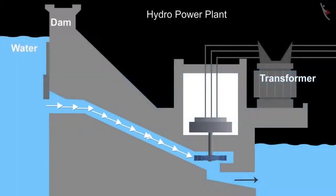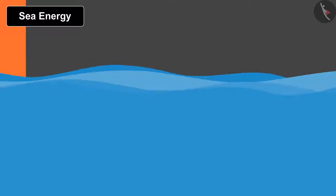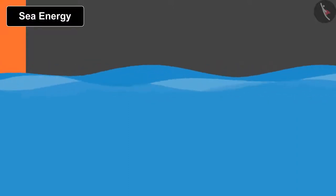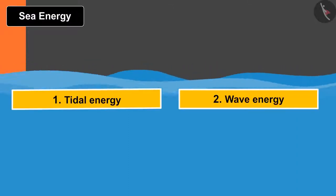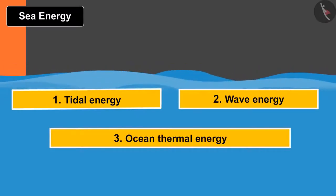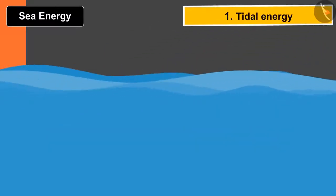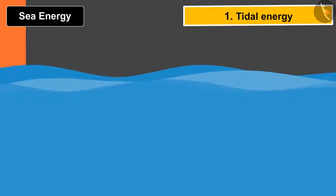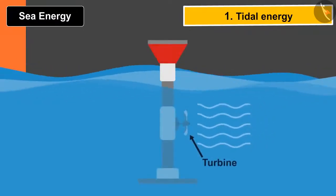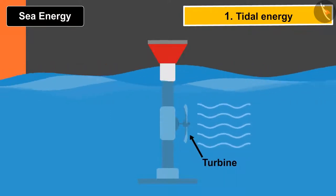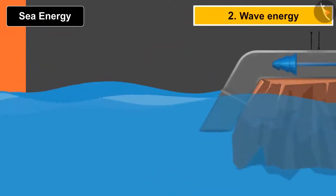The second form of energy is obtained from the sea. Similar to the hydropower plant discussed earlier, there are three kinds of sources here: tidal energy, wave energy, and ocean thermal energy. In tidal energy, due to high and low tides near the shores of the ocean, turbines rotate and with the help of a generator, electricity can be produced.